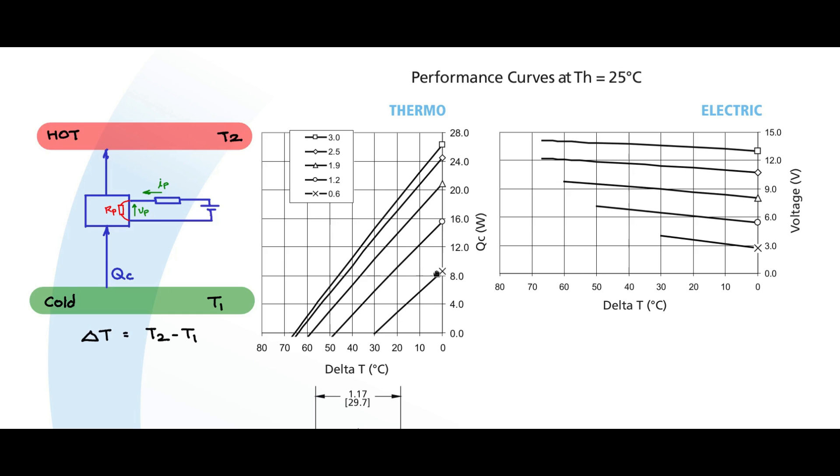This graph is with respect to IP of 1.2 amps flowing into it. This graph is for 1.9 amps flowing into the Peltier. This graph is for 2.5 amps flowing into the Peltier and this is for 3 amps flowing into the Peltier, and this Peltier is rated up to a max of 3 amps only.